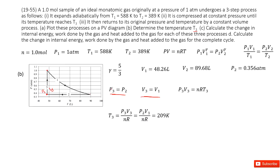We can use PV equals nRT: P3*V3 equals nRT3. So T3 equals P3*V3 over nR. Since P3 equals P2 and V3 equals V1, we input those two values and get the answer.